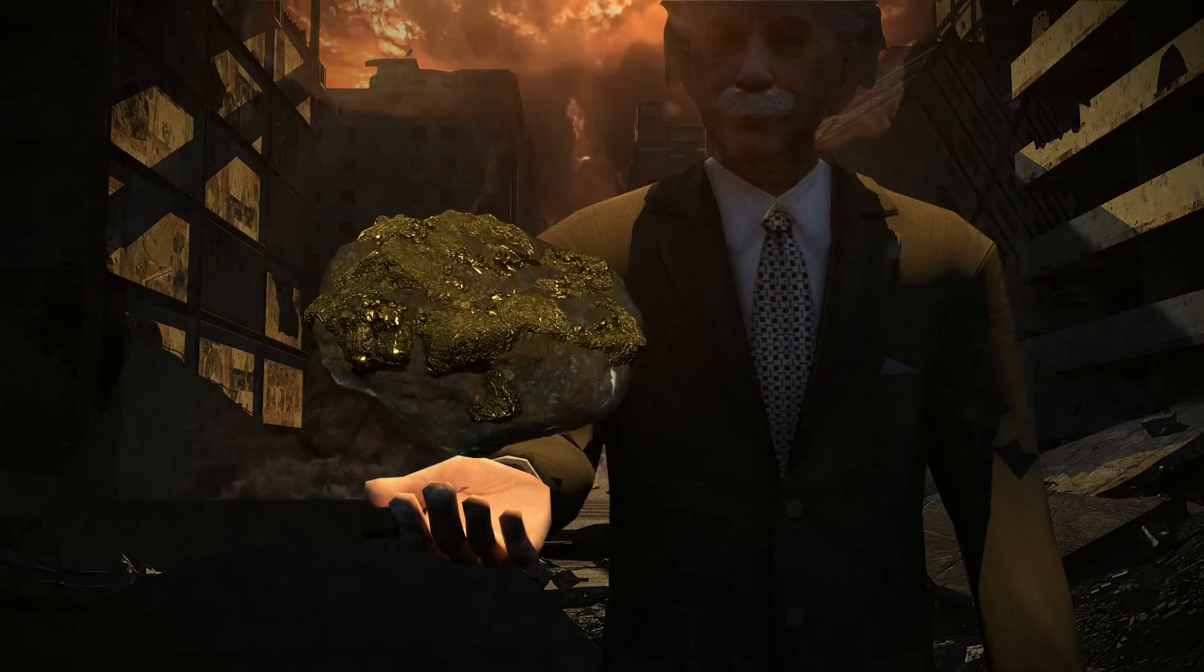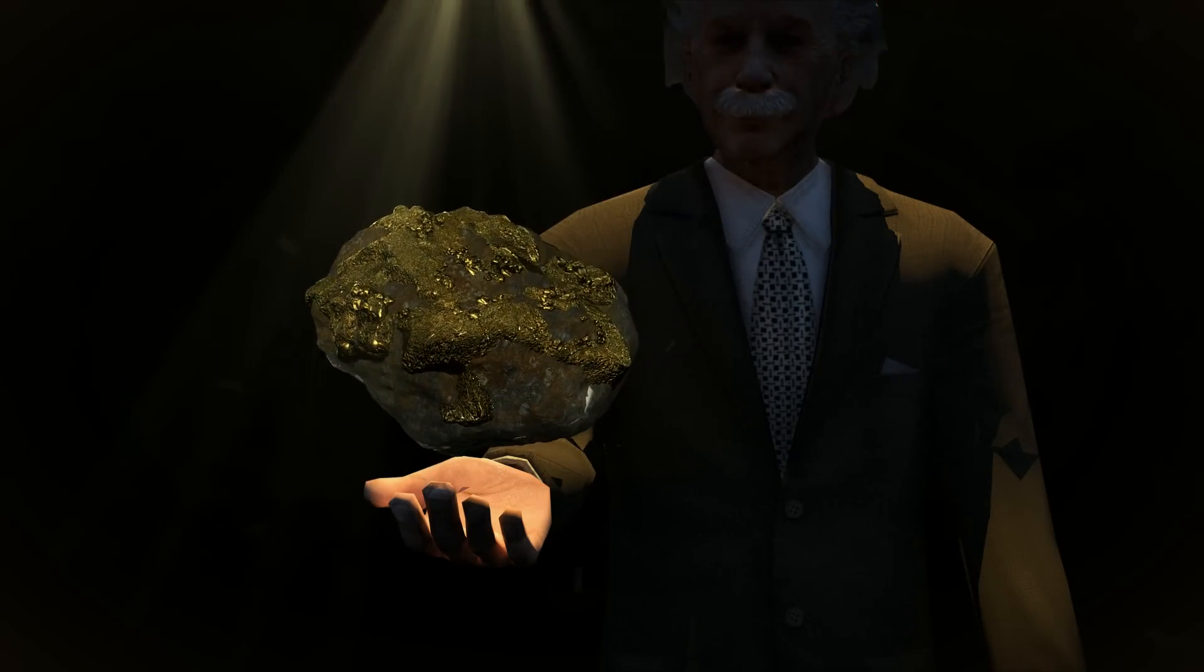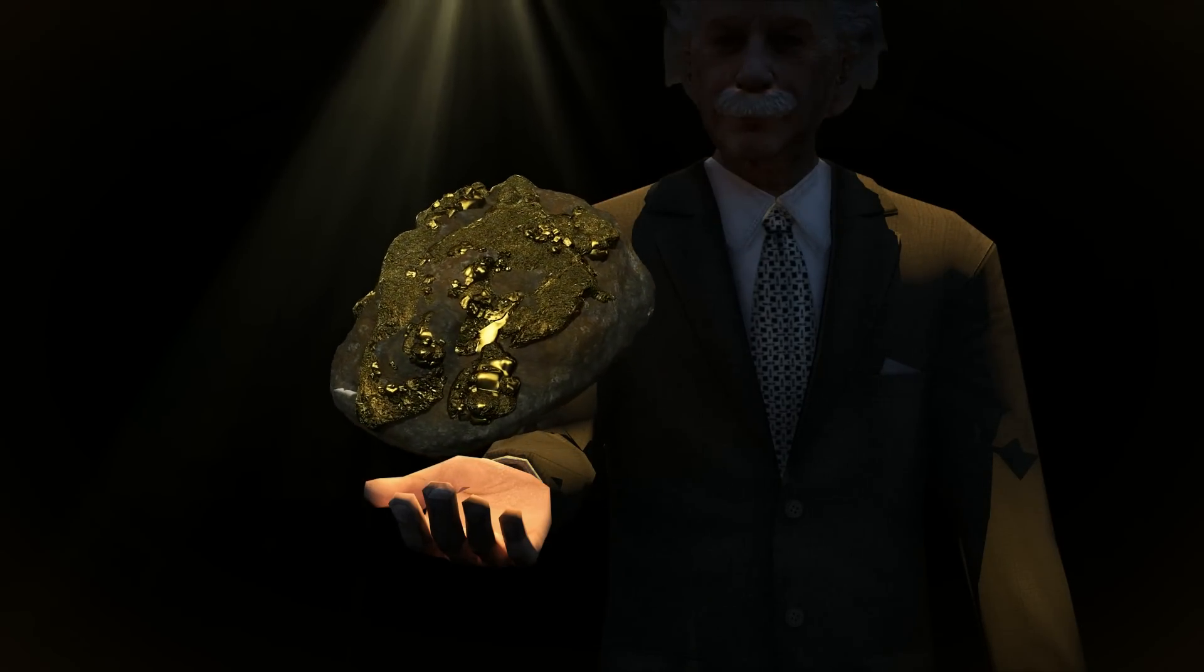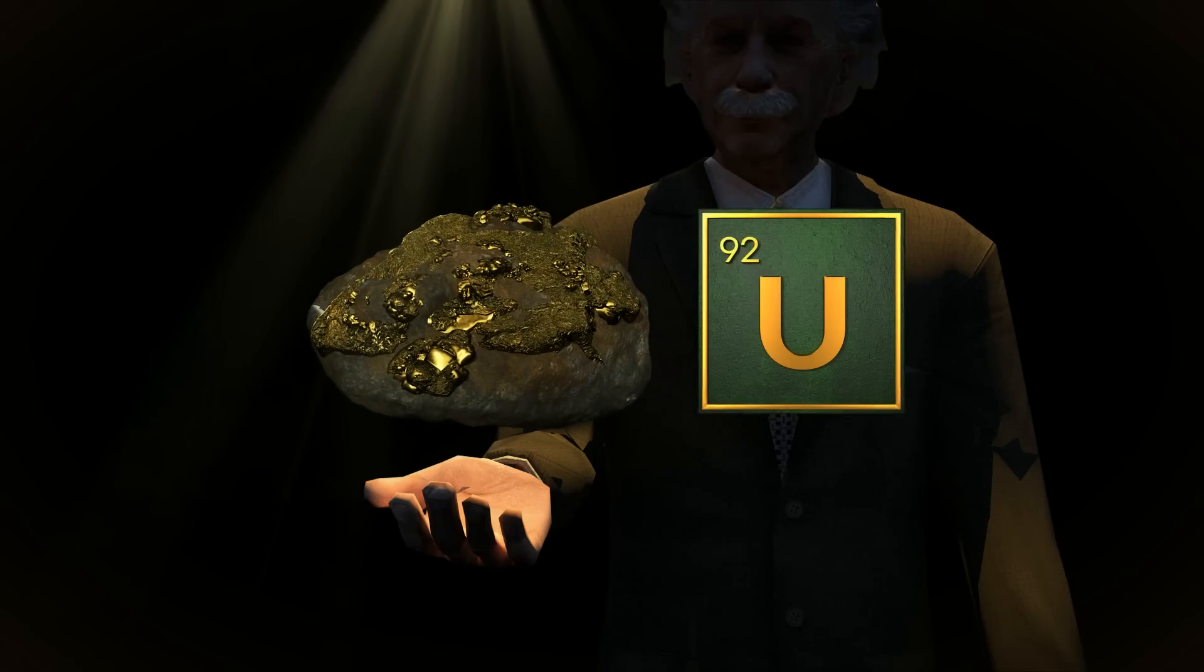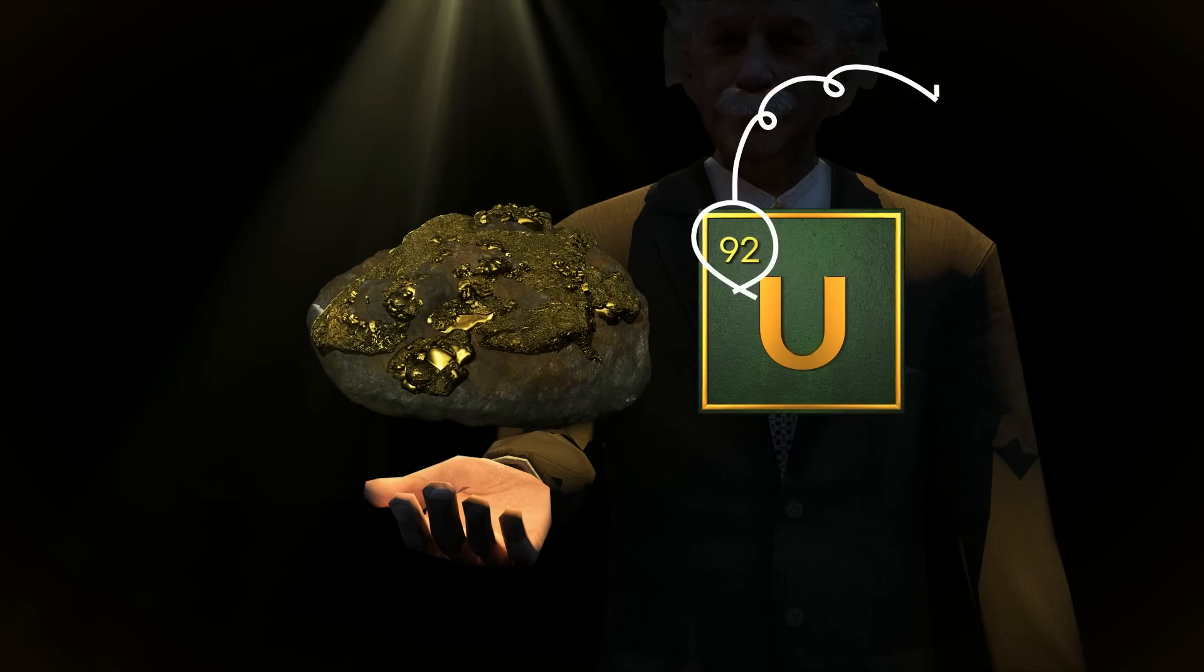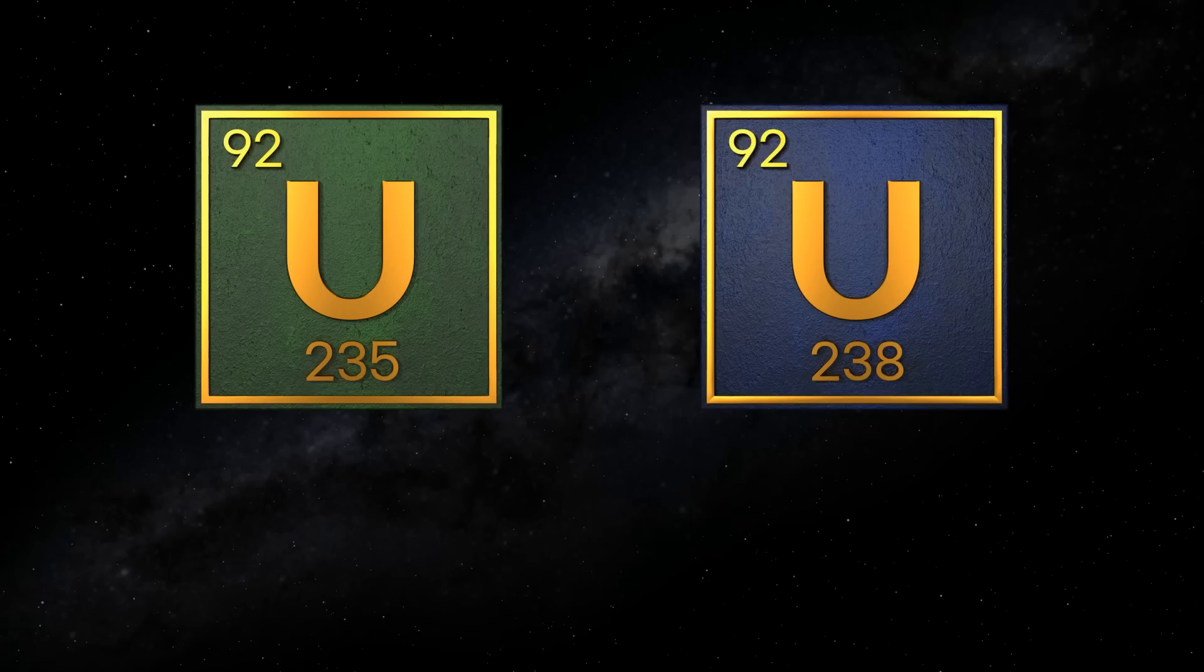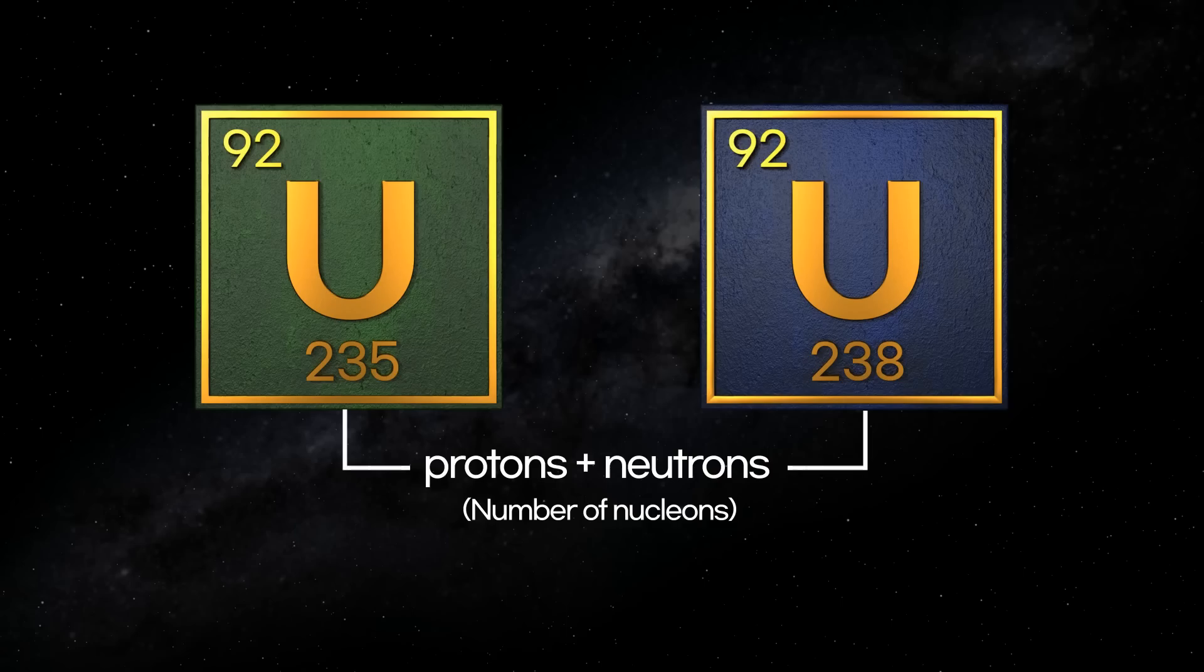Here's uranium. Uranium is an element with large atomic weight and is relatively easily found in nature. The element number of uranium is 92, which means that its number of protons is 92. There are uranium-235 and uranium-238, and the numbers represent the sum of protons and neutrons in the nucleus.